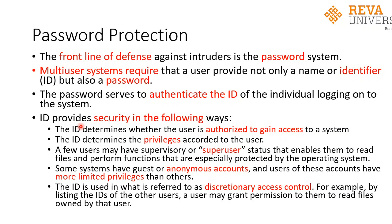The identifier provides security to the system in the following ways. First, the ID helps determine whether the user is an authorized one who can gain access into the system. Second, it determines what privileges the user has on the machine — ordinary privileges or super user privileges. A few users may have supervisory status where they can execute all kinds of commands. Some systems also have anonymous or guest accounts with more limited privileges.